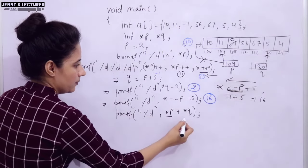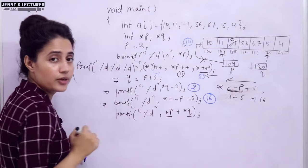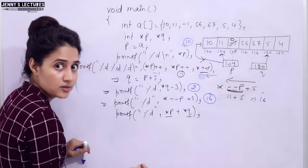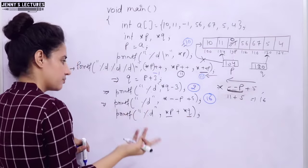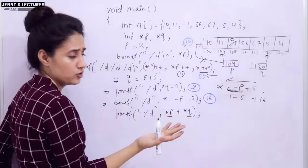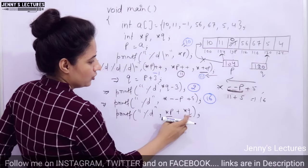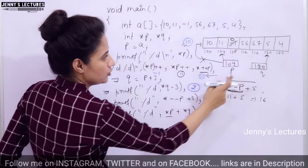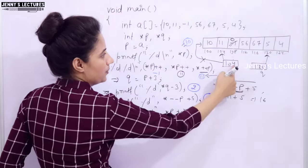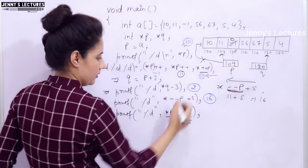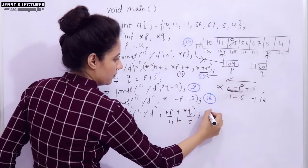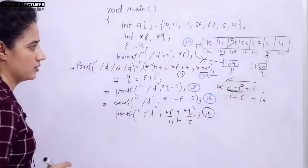Now the last expression: *P + *Q. Asterisk has higher precedence than plus, so both dereferences are done first. Q is pointing to 120 — *Q is 5. P is pointing to 104 — *P is 11. So 11 + 5 is 16. This gives you 16.